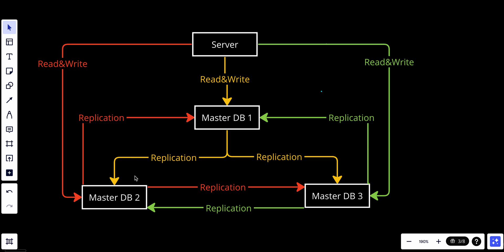In this example, we have three master databases. Each master supports both read and write requests. Every time a master gets a new update, it will replicate all the data to the other two masters — the same for master two and master three.